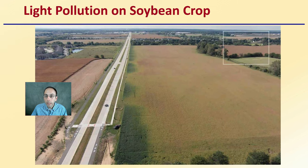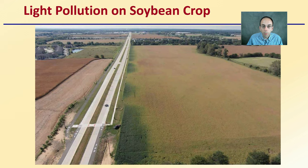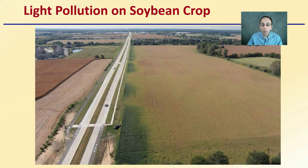When talking about light in general, this picture is interesting to show light pollution on a soybean crop. Looking at the soybean field near a roadway, we're noticing dark green bubble-like areas that correlate with streetlights. This shows a great visual of how light pollution can impact plants — we see the streetlights' impact on the green coloration of this crop.